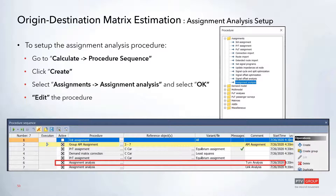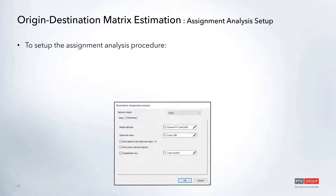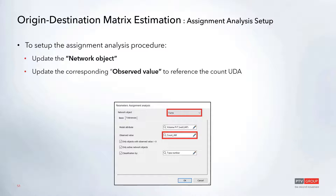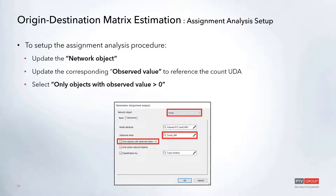Highlighting that option and clicking edit brings you to the assignment analysis window. Here you can update the network object to examine — if you have turn data or link data, you can choose that in the drop-down. You can also choose the observed value, which references the count UDA added to the network, and it will compare that against the model attribute, which pulls the volume PRT attribute. You can also select only objects with an observed value greater than zero to ensure actual count values are included in the comparison.